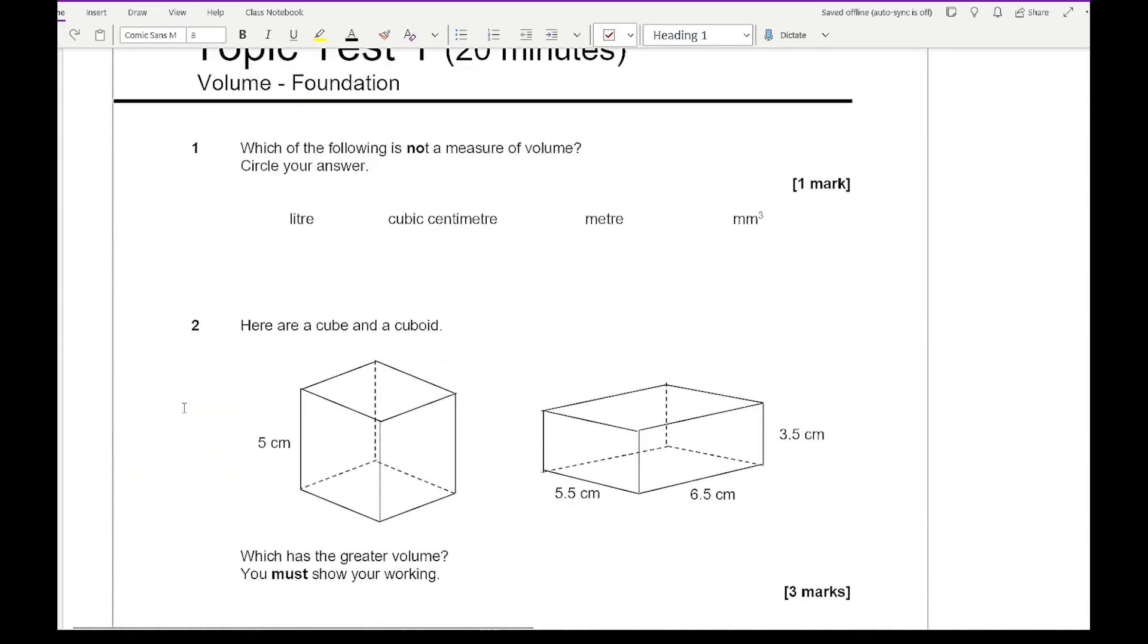So, let's have a look at question one. Question one says, which of the following is not a measure of volume? And so, we've got litre, cubic centimetre, metre, and millimetre cubed. And the one that you want to highlight is metre, as that's not a measure of volume, but volume can basically be the number of cubes inside a shape, but also the capacity as well. That's where litre comes into question. But also, one litre is also equivalent to 1000 centimetre cubed. So, they both go into each other.